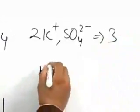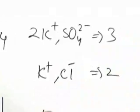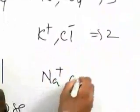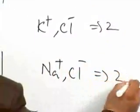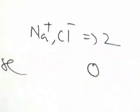Now, here it will be just K+, Cl-, 2, Na+, Cl-, this will be 2, glucose 0.